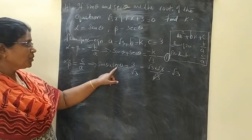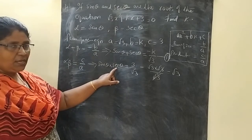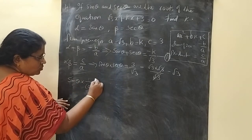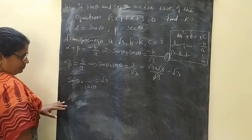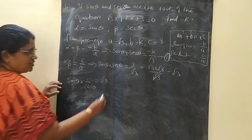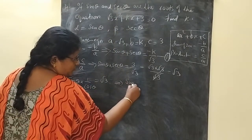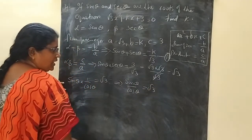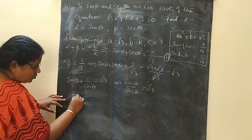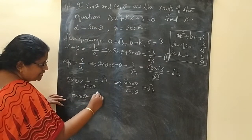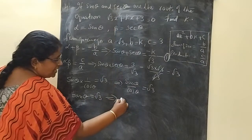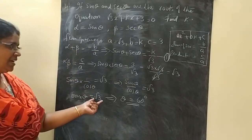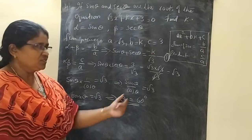sec θ is the reciprocal of cos θ, so we can write sin θ × (1/cos θ) = √3. sin θ / cos θ is tan θ. So tan θ = √3, which implies θ = 60°, since tan 60° = √3.